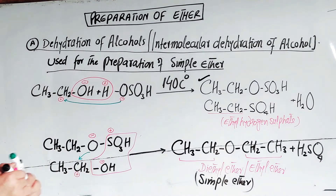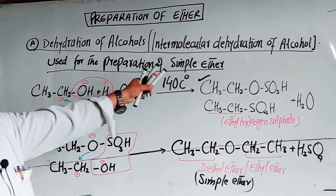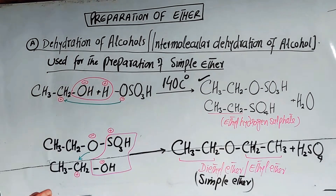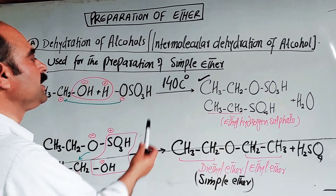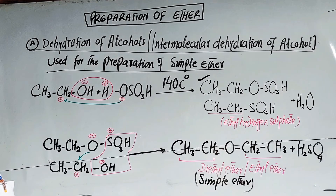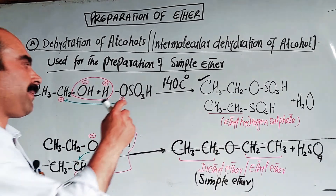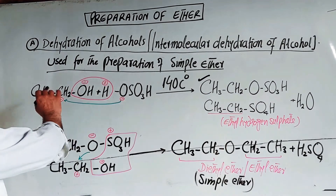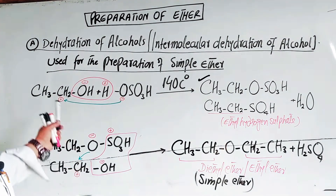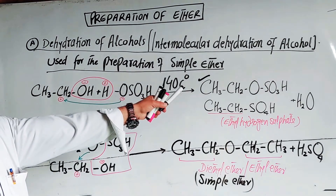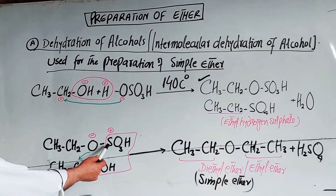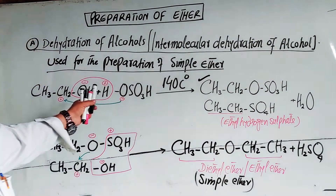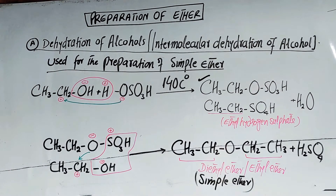This was all about the preparation of simple ether from the dehydration of alcohol. Key points: temperature is 140 degrees Celsius; alcohol must be taken in excess; the intermediate formed is ethyl hydrogen sulfate; the final product is diethyl ether. These are important MCQ points. Now the second method.